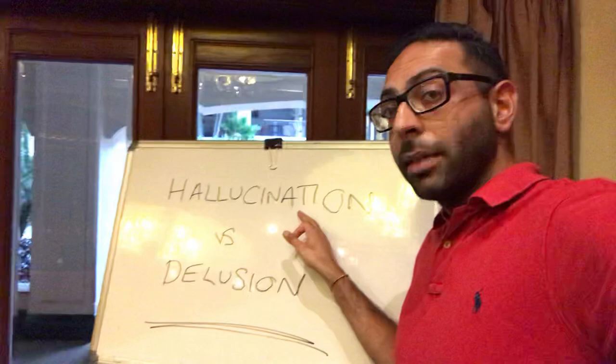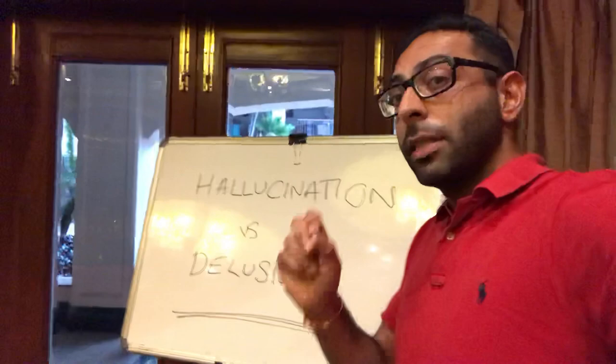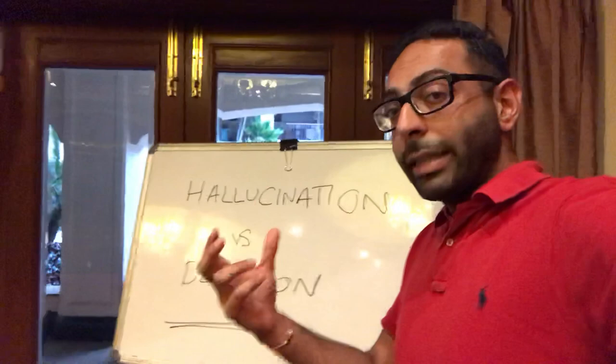This is different to a delusion. A delusion is an abnormal belief of something that's not really true. So you believe that you're the king of the world, or you believe that people out there are not liking you, for example. That's a delusion — an abnormal belief of things that are not really true, as opposed to a hallucination, which is an abnormal perception of things that are not really there.